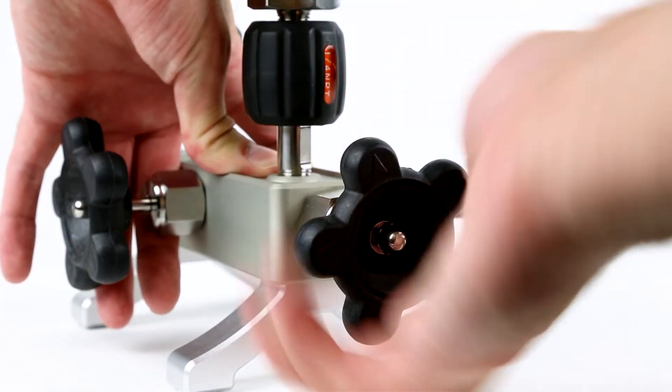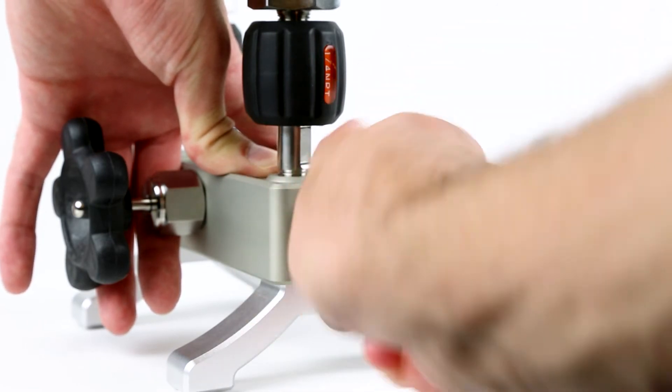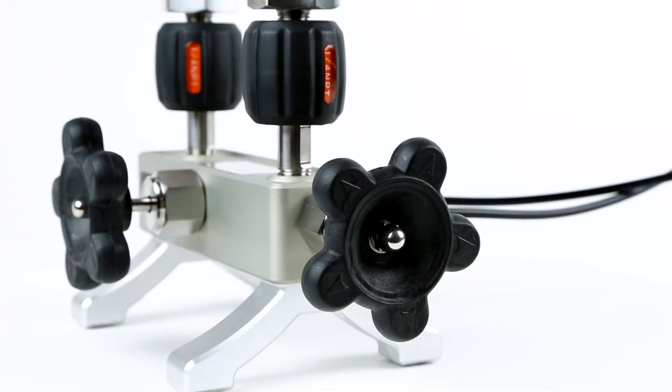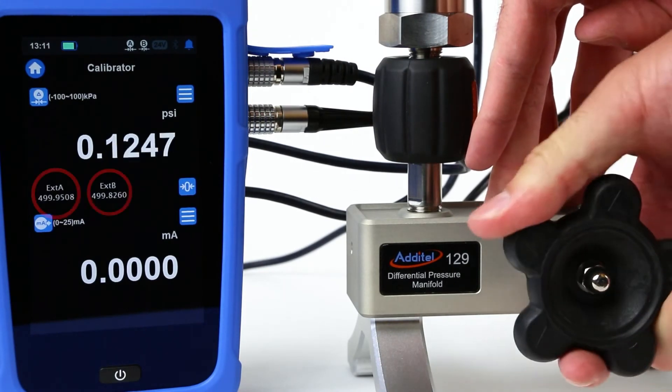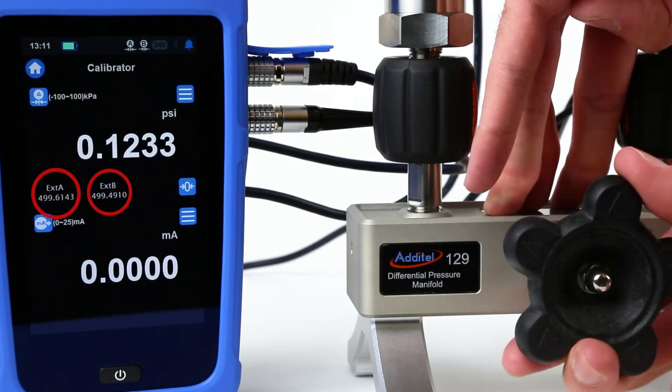To perform the high static pressure differential measurement, we start by closing off the high pressure line from the low pressure port. We next ensure that the valve in the front is open so that both pressure modules are seeing the low line pressure.